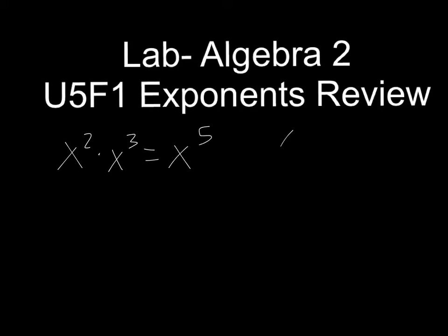But if you're taking x to the fourth to the second power, it's not like the first case where they're both written out. This is called power to a power, and you actually multiply the exponents to get x to the eighth. If the exponent is outside of a parenthesis, you have to distribute to the inner exponents — you multiply them.